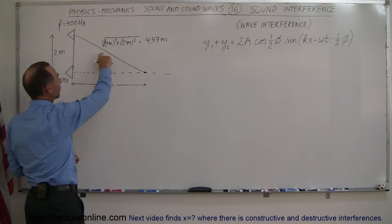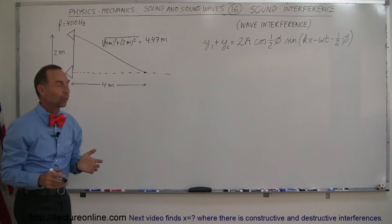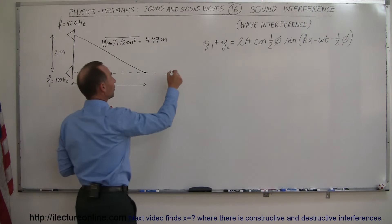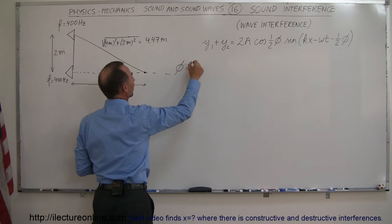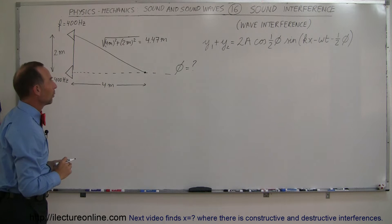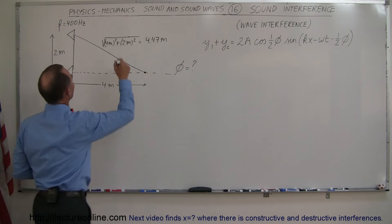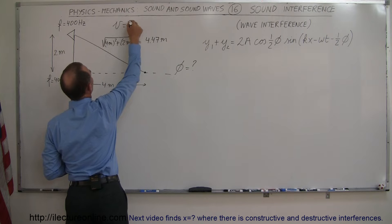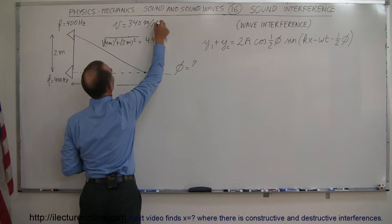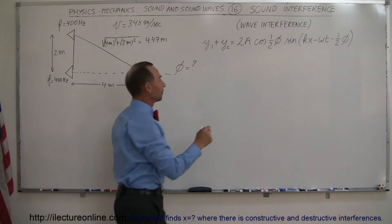When the waves come together, there's going to be a phase difference, and we're going to try to figure out what that phase difference is. Let's call phi the phase difference. We'll say the velocity of sound is 340 meters per second, and we want to figure out the wavelength of those sound waves.